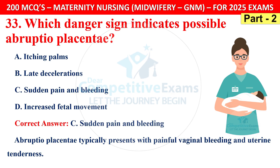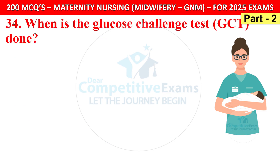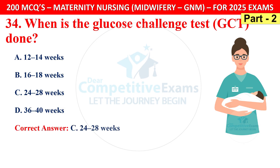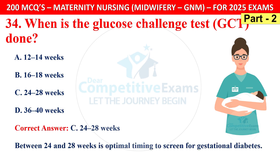Question 34: When is the glucose challenge test done? Options are 12–14, 16–18, 24–28, or 36–40 weeks. The correct answer is C — 24–28 weeks. This is the optimal timing to screen for gestational diabetes.